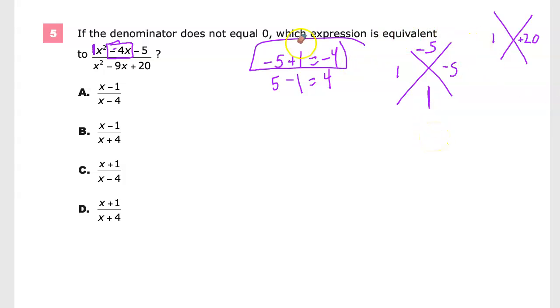For the other one, I'm trying to make positive 20, and I want factors that give me negative 9. So I'm going to look at the factors of 20: 1 and 20, 2 and 10, 4 and 5, and that's pretty much all I need to worry about because I know 4 and 5 equal 9.